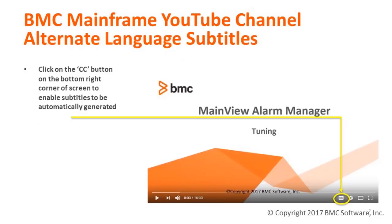There are different ways to enhance your viewing experience. One way is to turn on the CC or closed captioning option. Do this by simply clicking on the CC button on the bottom right corner of the screen. Subtitles will then be automatically generated for the video.